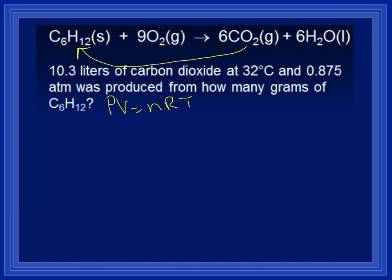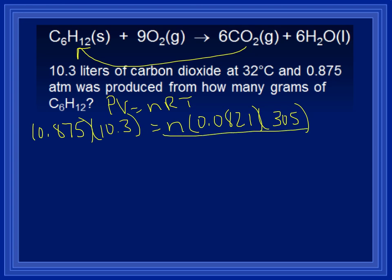Okay, so our pressure, 0.875, and that's in ATMs. Our liters, 10.3 liters. And we're trying to solve for N. R is going to be the 0.0821 because our pressure's in ATM. And our temperature, 32 plus 273, which gives us 305 Kelvin. Okay, so solving for N, we are going to divide each side by 0.0821 times 305.